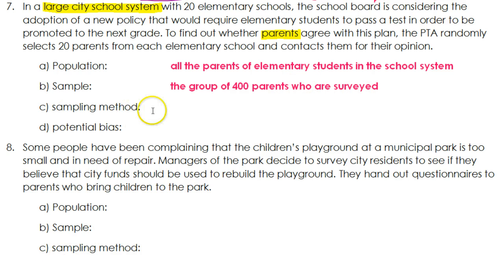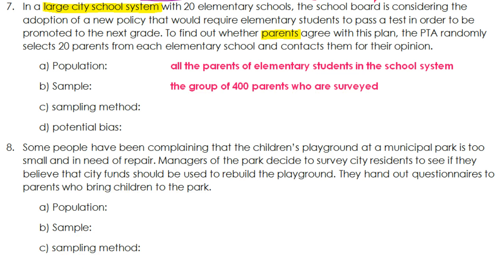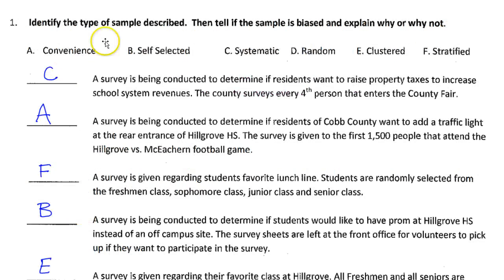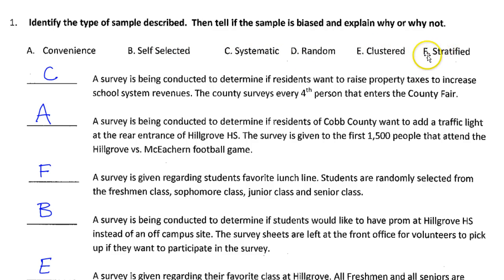Next we're asked about the sampling method. These were the choices: convenience, self-selected, systematic, random, clustered, or stratified.